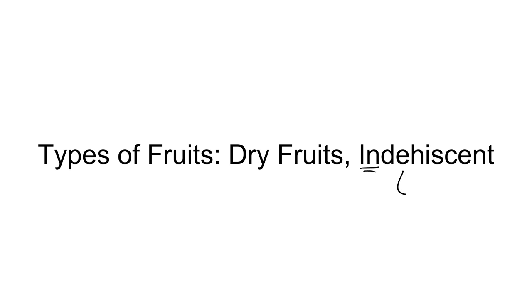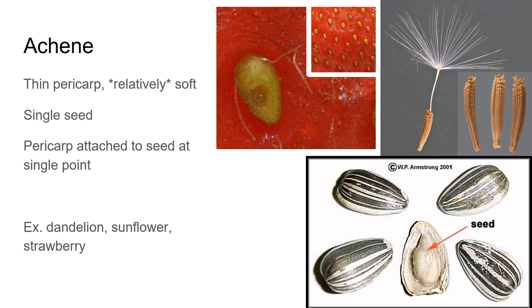Now let's look at types of fruits, starting with dry fruits — things you probably wouldn't have thought of as fruits before. These are indehiscent. Dehiscent means to dry and open, so a dehiscent fruit dries at maturity and opens up on its own. Indehiscent means the fruit dries but uses some other mechanism for dispersing seeds — it won't open on its own. The first type is an achene. You've probably seen achenes most often on the outside of a strawberry. Strawberries aren't berries; they're an accessory fruit, and the actual fruits of the strawberry are those little seed-looking things on the outside, which are achenes.